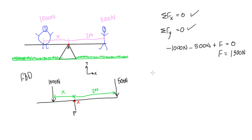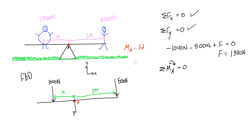Lastly, for static equilibrium in two dimensions, we need the sum of moments about some point to equal zero. The sum of moments about point A must equal zero. One formula we can use is that the moment about A equals the force times the perpendicular distance. Since all forces are vertical here, this will be straightforward.